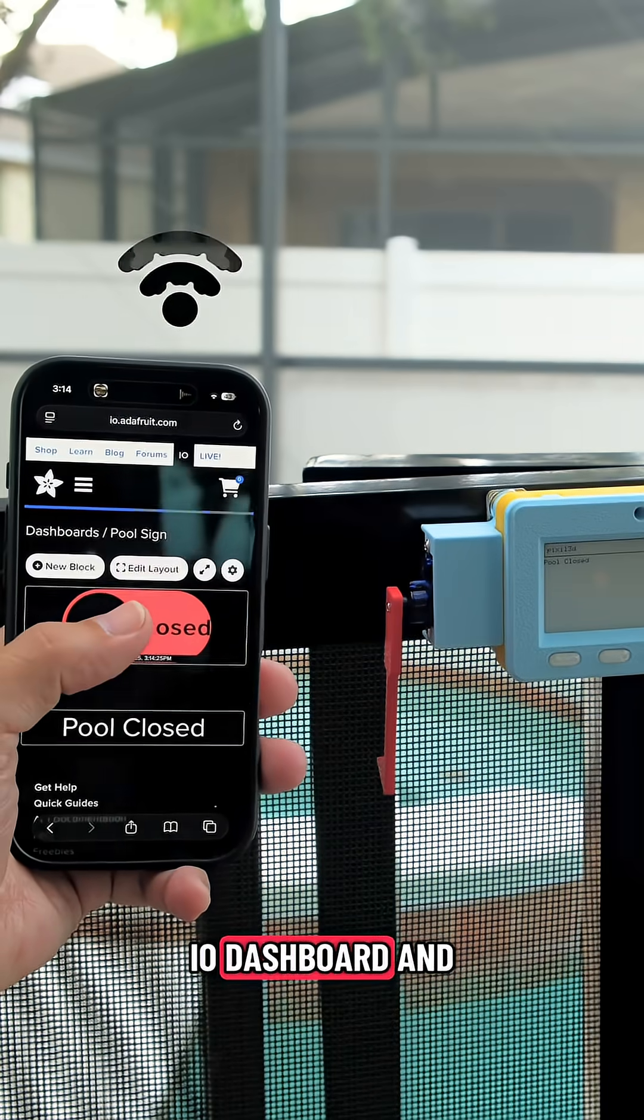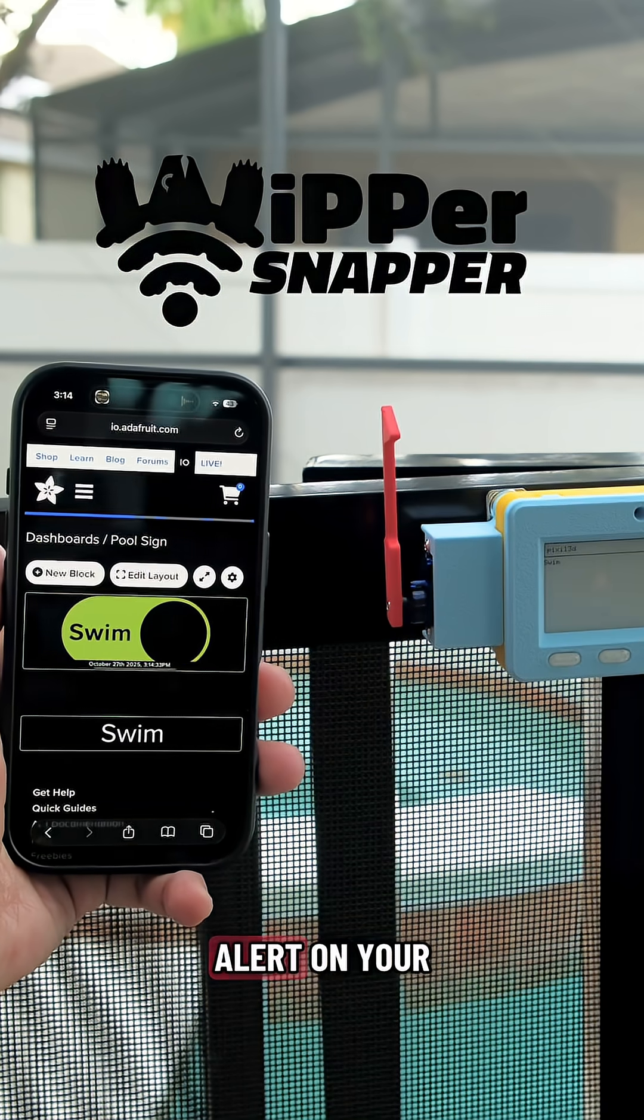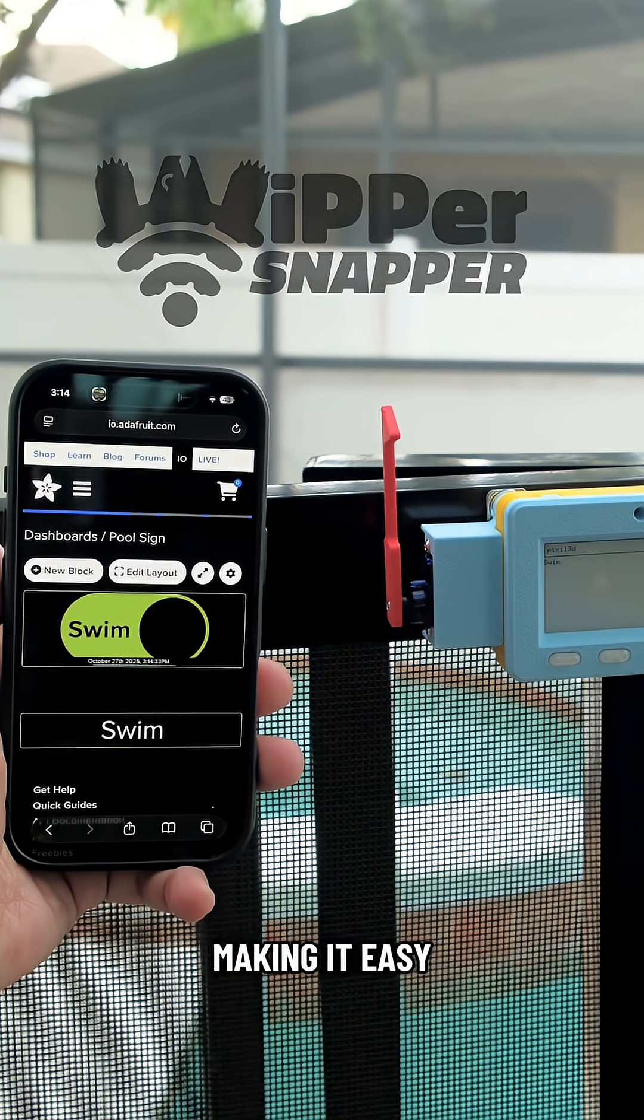With an Adafruit IO dashboard and Whippersnapper, you can remotely trigger the pool alert on your mobile phone or tablet, making it easy to alert your friends.